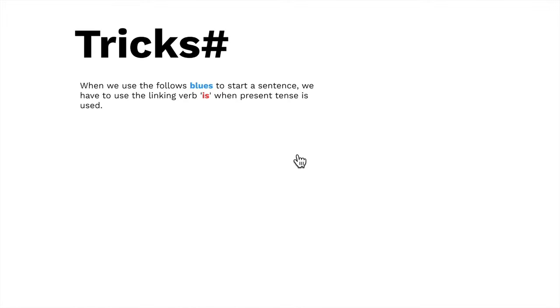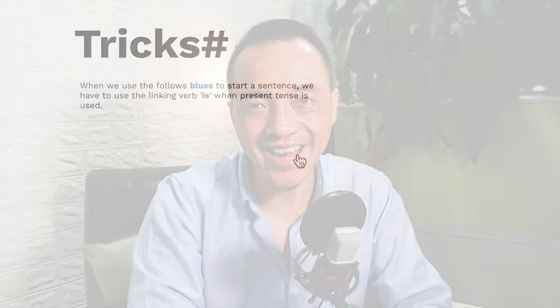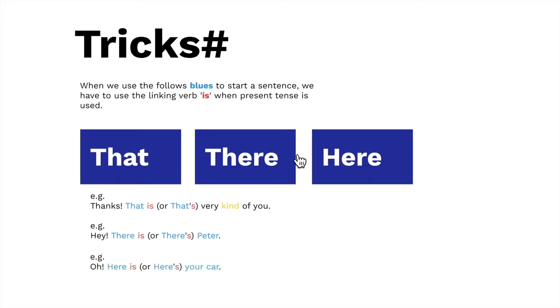There are some tips I would like to share for using IS and ARE. When the following words start a sentence, we have to use IS: 'that,' 'there,' and 'here.' For example: 'That is very kind of you.' Or: 'That is Peter.' Or: 'Here is your car. Very nice.'